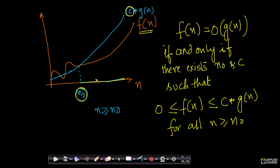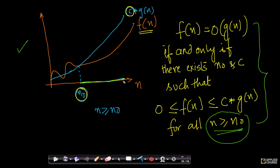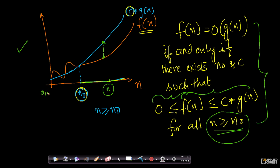Let us connect the dots. This mathematical statement is the same as what we represent in the graph. For all n greater than or equal to n0, your f of n is less than or equal to c into g of n. The f of n curve is below the c·g(n) curve for any value of n here, so c into g of n is greater than f of n. And f of n is greater than or equal to 0, so it lies above the x-axis.